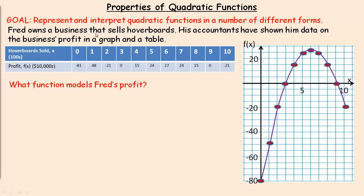In this example, Fred owns a business that sells hoverboards and his accountants have given him data on the business's profit — both a graph and a table. Hoverboards sold x represents the sales in hundreds, so 2 means 200 sold, and 10 means 1,000 sold. The profit f(x) is in ten-thousands, so 24 is actually $240,000, and negative 21 means a loss of $210,000.